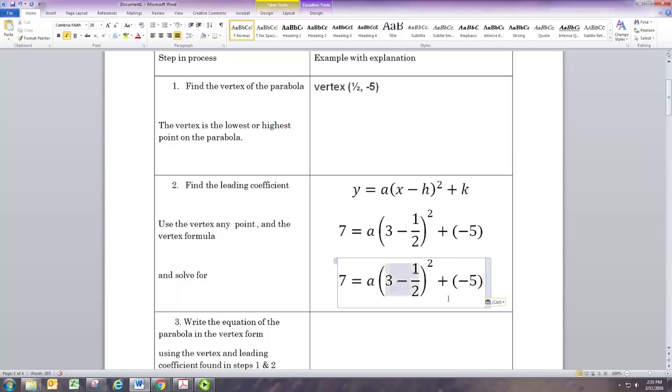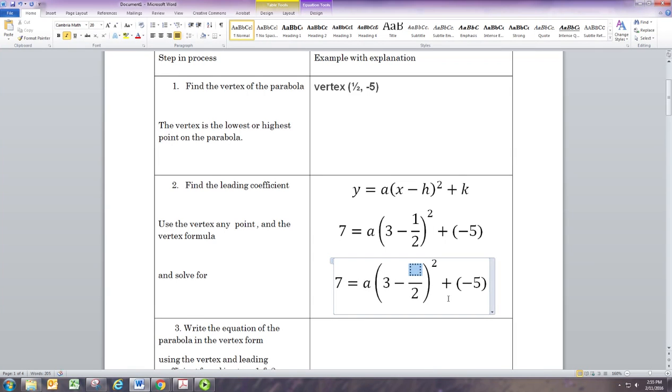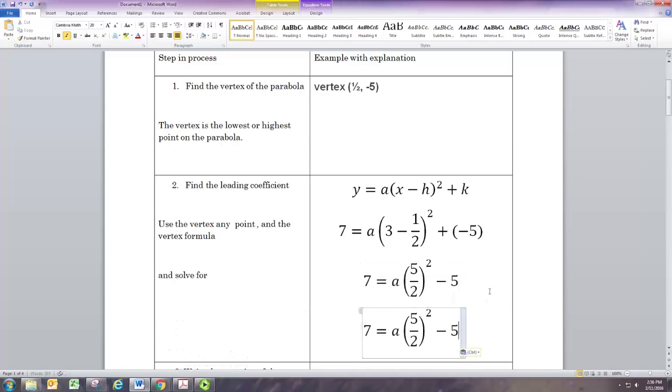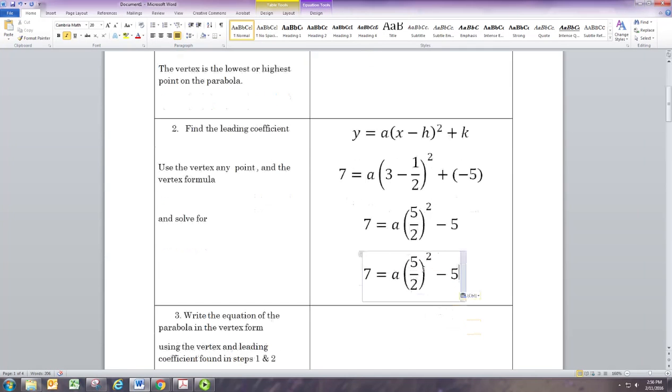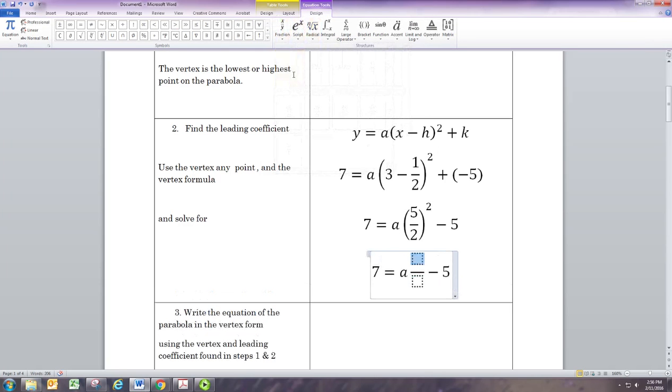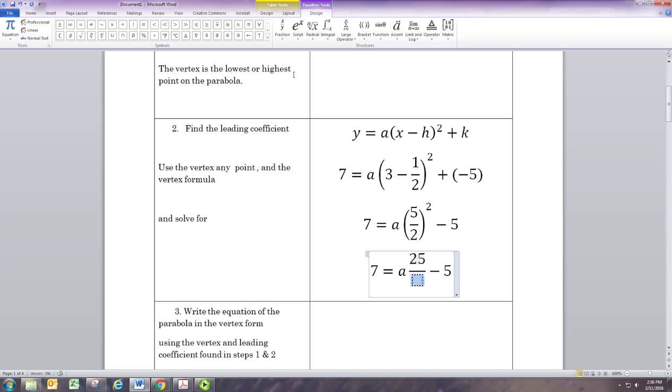You subtract 1/2 from 3 and you'll get 5/2, and adding a negative 5 is the same as subtracting 5. Let's go ahead and square that fraction. So 5 squared is 25 and 2 squared is 4.